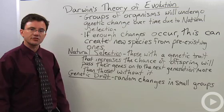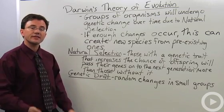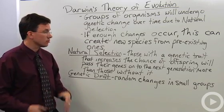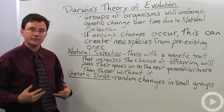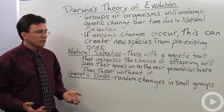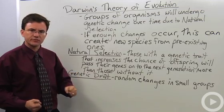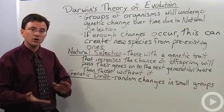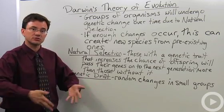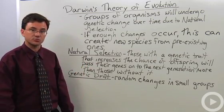Natural selection is the idea that those who have a genetic trait that increases their chance of having children or offspring will pass their genes on more than those who don't have that genetic trait. This is often confused as survival of the strongest. It's not based on how strong you are, it's how reproductively fit you are. What's your chances of having your children live long enough for them to reproduce as well?